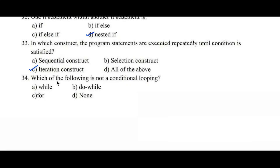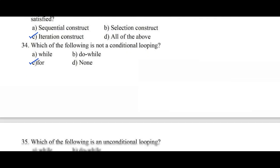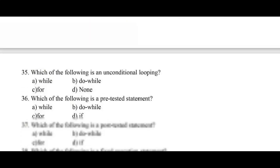So here a certain set of instructions will get repeatedly executed until a certain condition is satisfied — these are called iteration constructs. Hence option C is the right answer. Question number 34: Which of the following is not a conditional looping? Option A. While, B. Do-while, C. For, D. None. Here option C, for loop, is not a conditional looping construct.